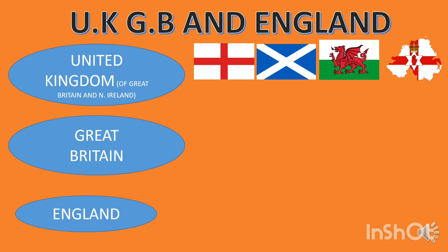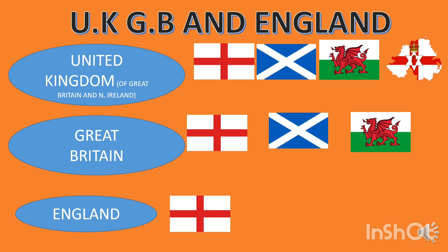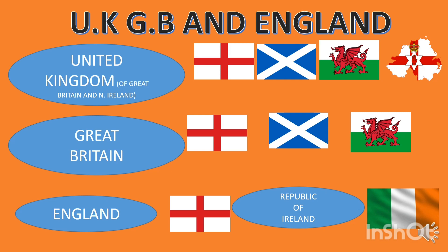Great Britain is composed of England, Scotland, and Wales — so the Republic of Ireland is not part of Great Britain. England is a single country. Many people confuse the United Kingdom with England, but England is a different country from the United Kingdom. The Republic of Ireland is the only republic which does not belong to the United Kingdom or Great Britain. I hope you understand this difference between the United Kingdom, Great Britain, and England.